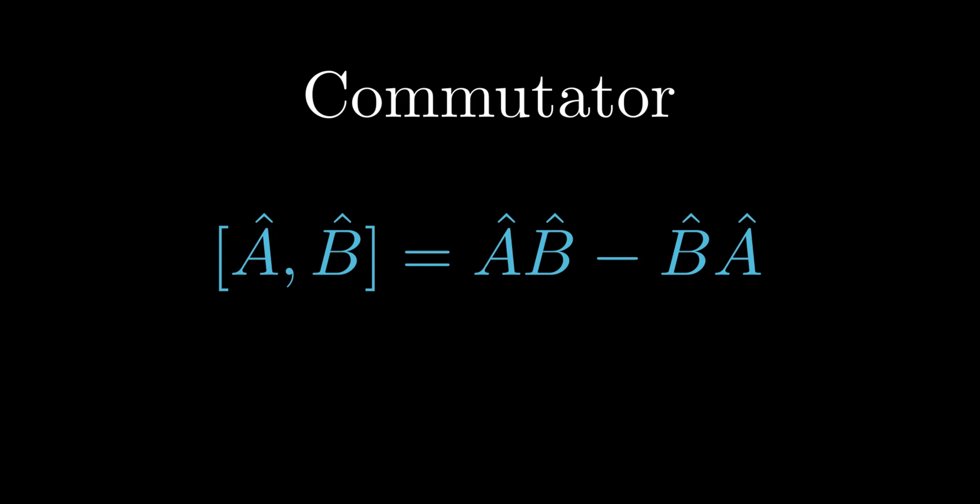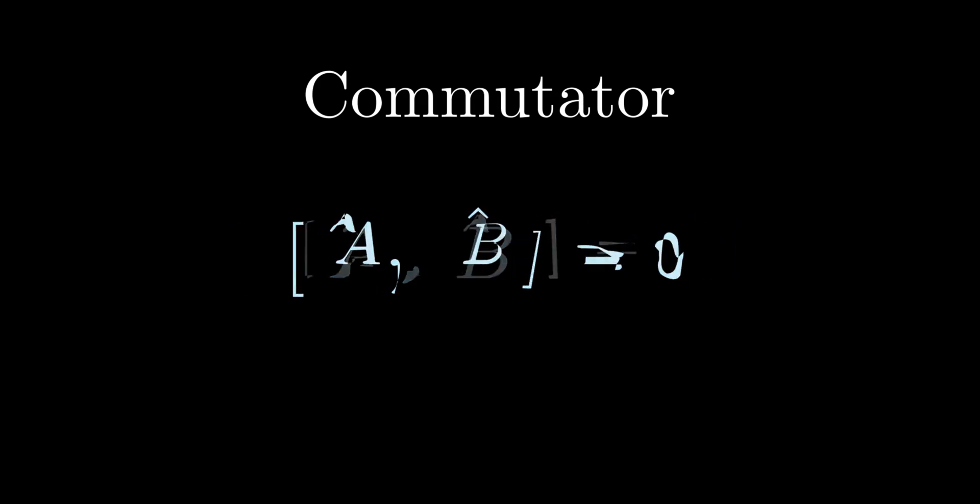The commutator is defined as the difference of two operators in different order. When the commutator between two operators is zero, it is said that the two operators commute.